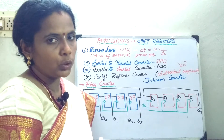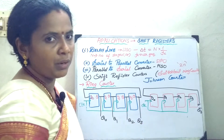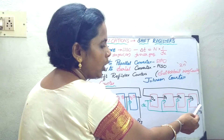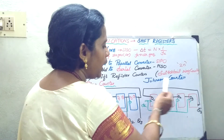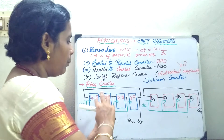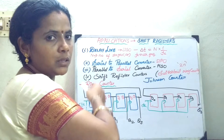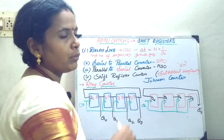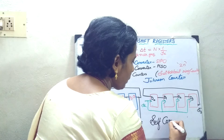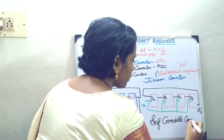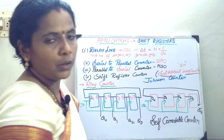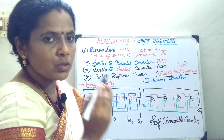Now we will move on to the Johnson counter. Circuit-wise, the difference is that d0, d1, d2, d3 are also circulating, but instead of giving q3 back to the input, I am taking it from q3-bar. This is because in the ring counter, if by any interference a spurious 1 appears, that 1 will continue forever. Whereas in the Johnson counter, it is also called a self-correctable counter or a switch-tail ring counter, and it goes step by step in a proper sequence.